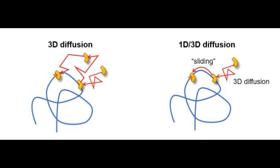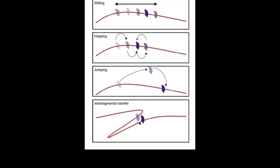We can wonder how proteins move along the DNA. There are two possible ways: either active translocation, which requires ATP energy — motor proteins such as helicases or polymerases assist here — or diffusion, which is a passive process. Diffusion can be facilitated and includes multiple examples such as jumping, hopping, or sliding through the DNA sequence.